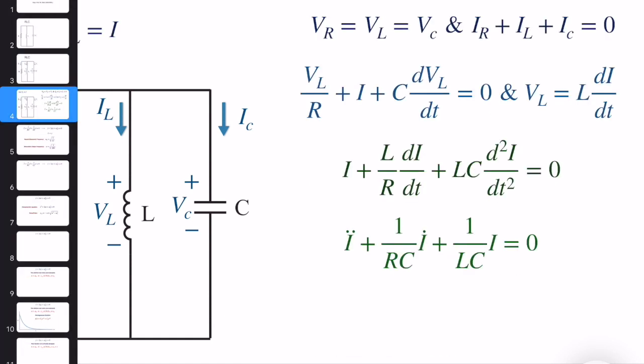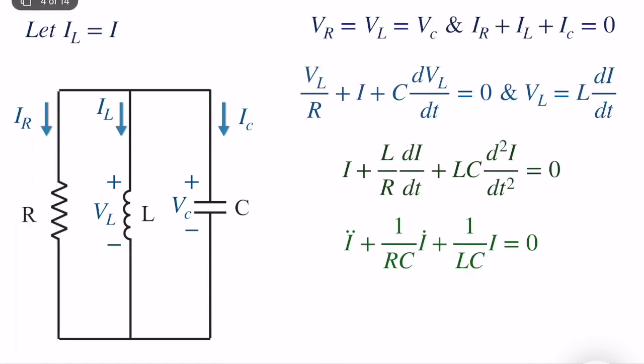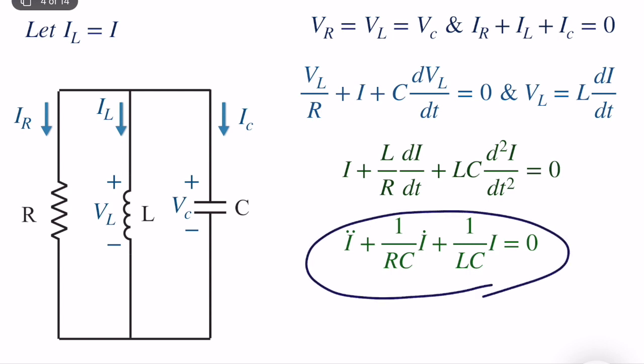Organizing into standard form: I-double-dot + (1/RC)·I-dot + (1/LC)·I equals zero. This is a second-order differential equation, which looks very familiar if you are taking a differential equations course.